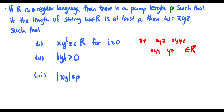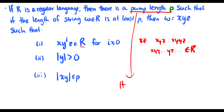y greater than zero means we don't want to be pumping something like lambda. And x y less than or equal to p means we have to find our y before we reach the pumping length. So what is the pump length? Well this is really just the number of states in our finite state machine, at least in the informal proof.